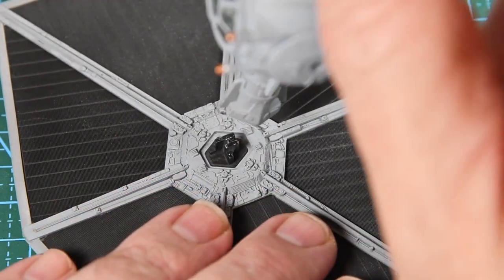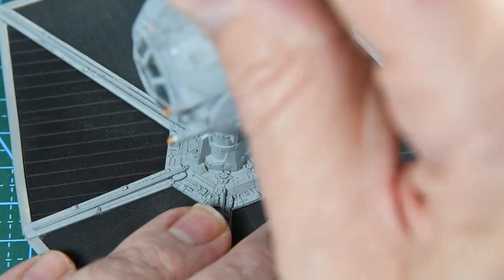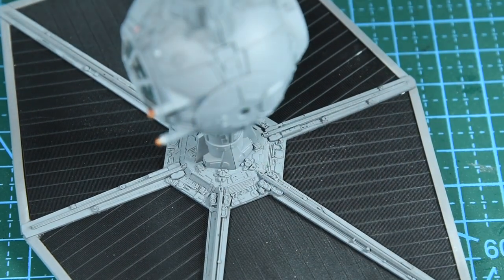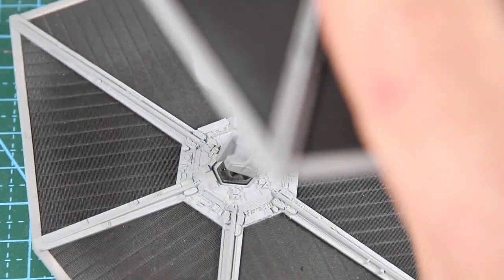Once everything's dried, we can fit the wing by pressing the body into the center fitting, as seen here. Then do the same for the other side, and the TIE Fighter is almost complete.